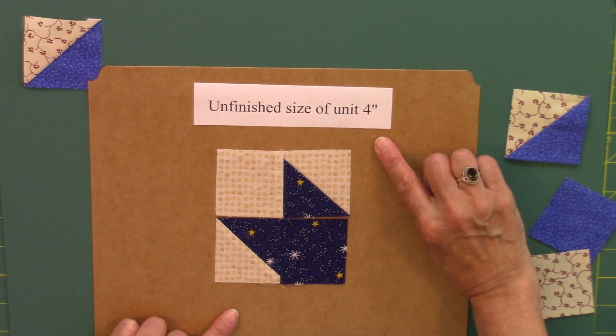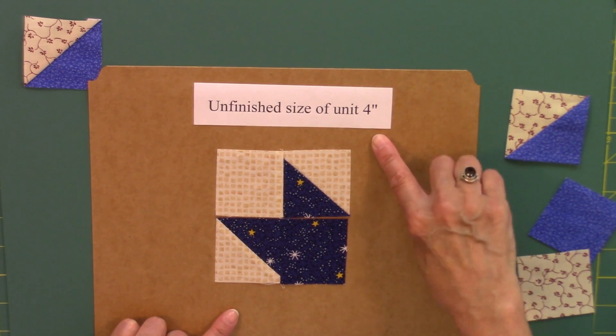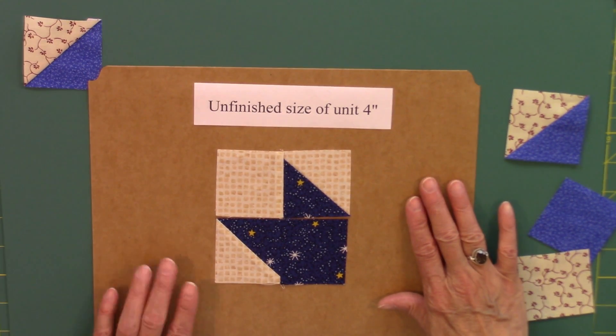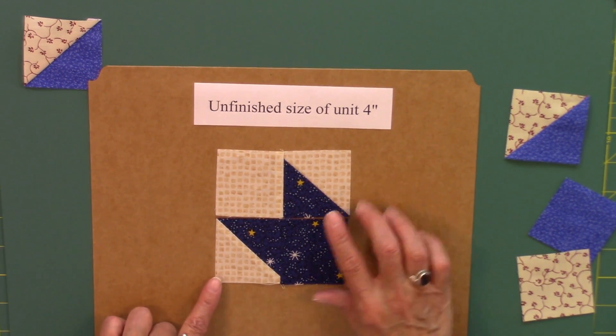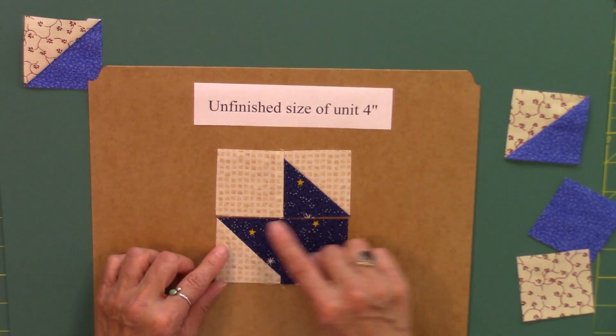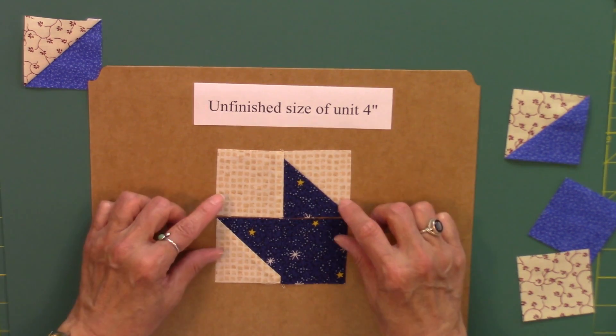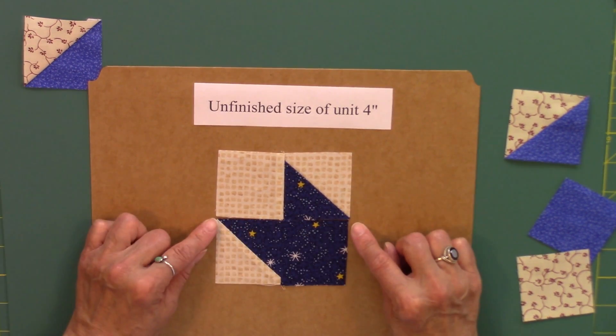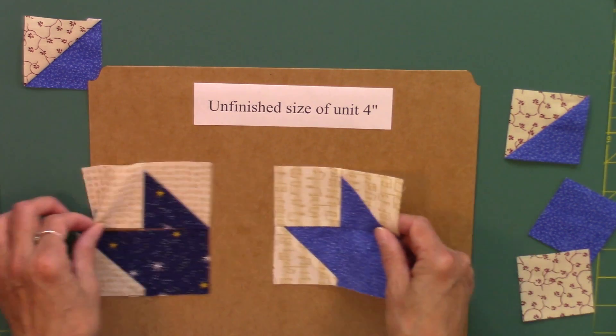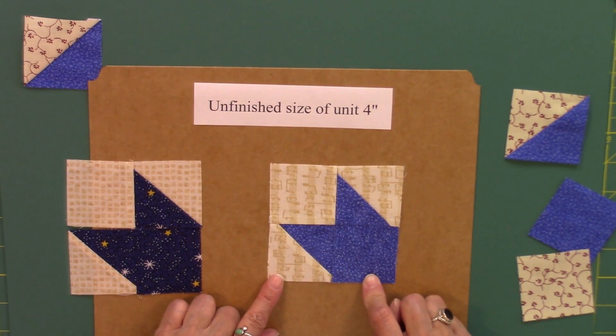And this unit eventually, the unfinished size is going to be four inches. If this is the first time you're making this unit, it might be a good idea to go ahead and place a ruler on that to make sure this is four inches across before you join that final seam. Go ahead then and sew that last seam to create one fourth of the star block.